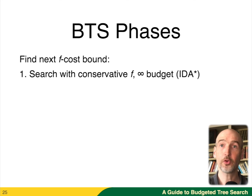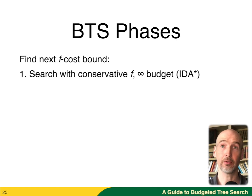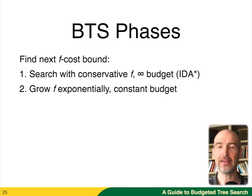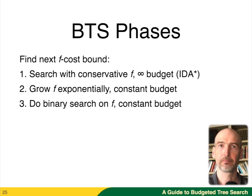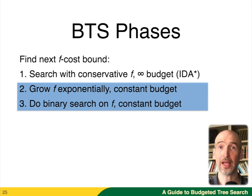How does BTS work? First, we just run IDA* — we're conservative and use the minimum F cost possible. If we have a problem where IDA* is the right approach, we'll just use IDA* every step and go no further. We'll see exponential growth in the tree and BTS's behavior will be exactly identical to IDA*. However, if IDA* fails with the conservative F cost to grow the number of nodes exponentially, then we're going to start growing the F cost exponentially with a constant budget. If we exceed our budget, we'll do a binary search. These are the two new steps that do not exist in IDA*, which we add to get the performance we want.